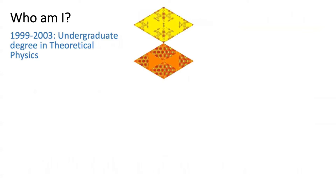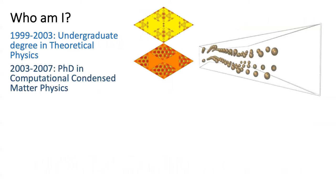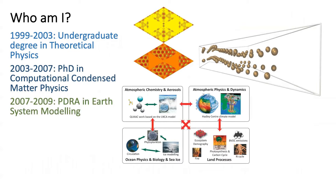I started my career at the University of York where I did a degree in theoretical physics. I then stayed in York to do a PhD in condensed matter physics and I came to Cambridge to move into earth system modelling.